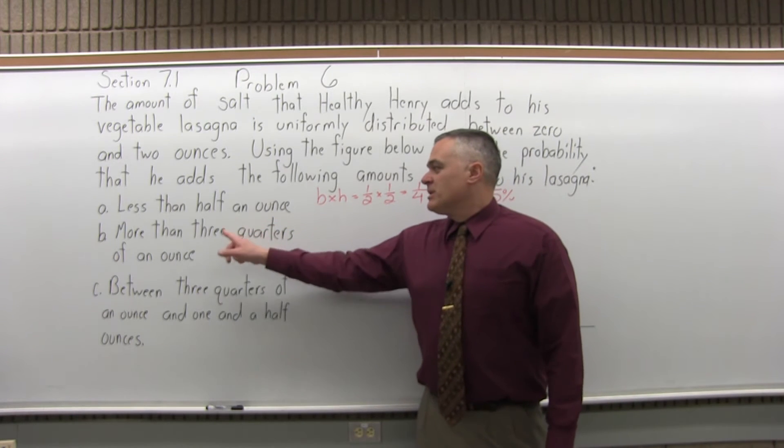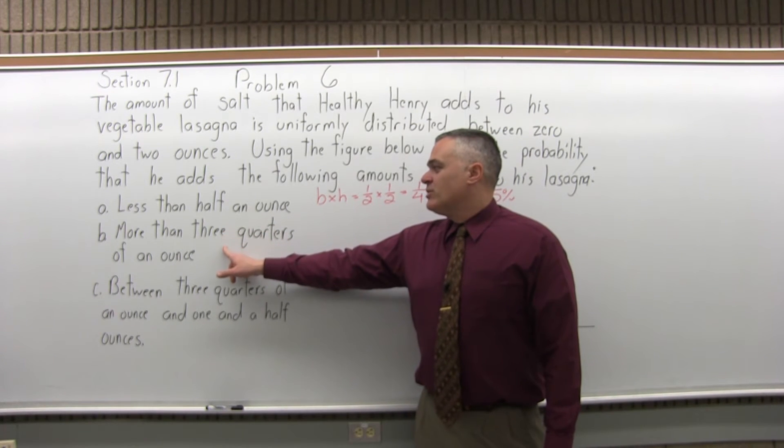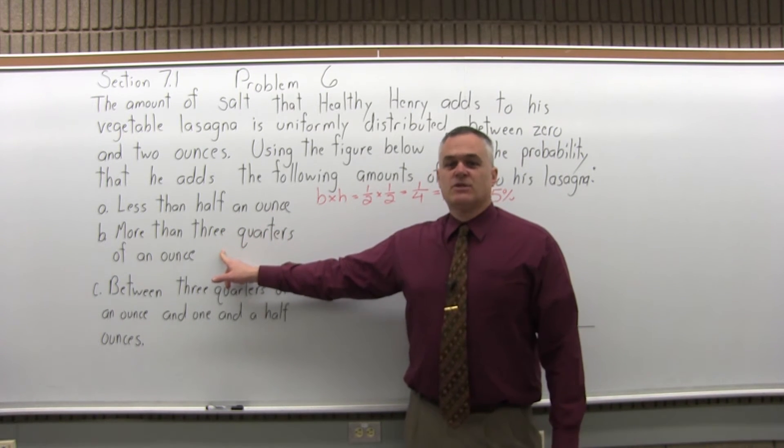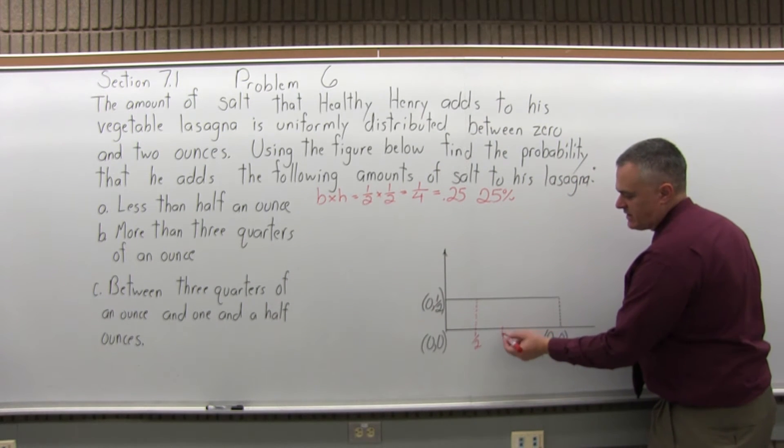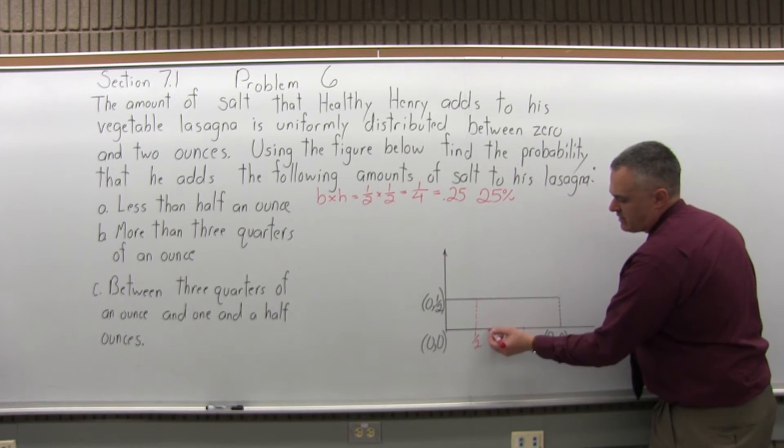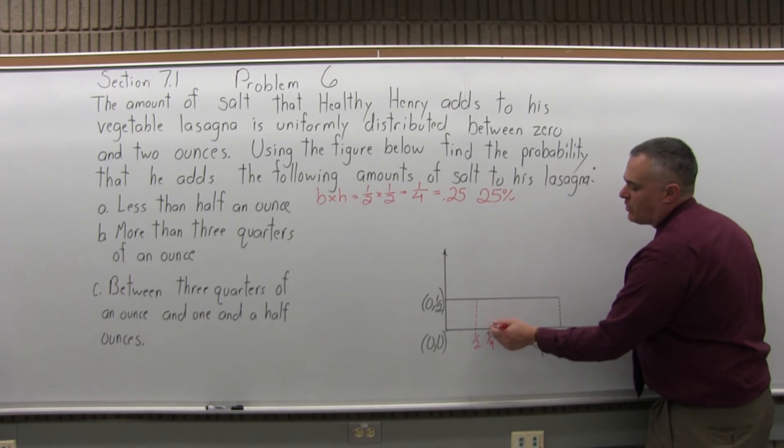So B, what's the probability that he adds more than 3 quarters of an ounce to his vegetable lasagna? So 3 quarters of an ounce. So here is 1, this would be 1 and a half, here's 3 quarters, right between 1 half and 1. So it's more than 3 quarters.